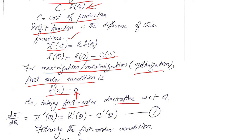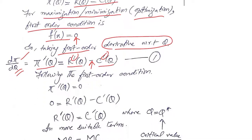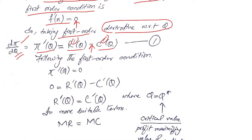The derivative is taken with respect to Q because Q is the independent variable. Pi is the function and its derivative is taken — we can write it either in function notation or prime notation. On the right hand side, the functions come in their derivative forms with a negative sign in the middle, applying the difference rule.